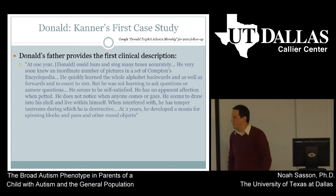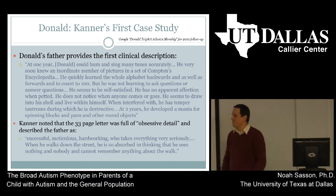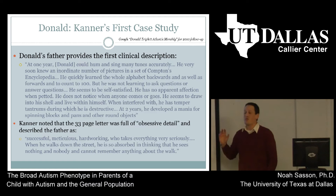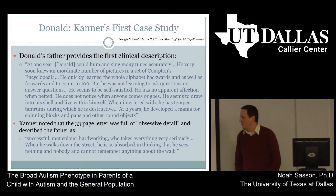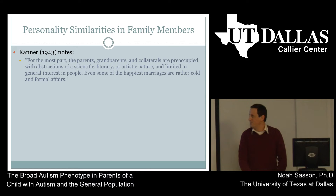In Kanner's description of Donald, he references the father himself. He noted that this 33-page letter sent to him by Donald's father was obsessive in detail, and he described the father as successful, meticulous, hard-working, who takes everything very seriously. 'When he walks down the street, he is so absorbed in thinking that he sees nothing and nobody, and cannot remember anything about the walk.' Some of these characteristics might sound familiar to those of you in academia and the sciences.